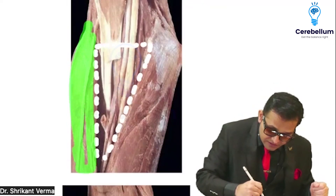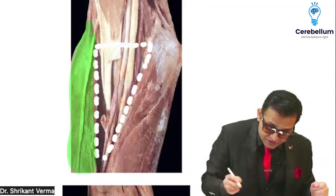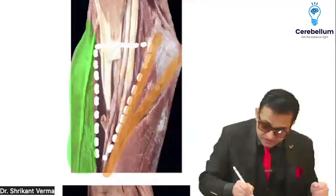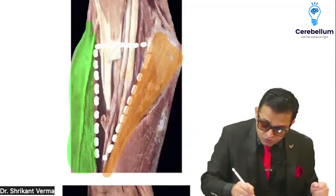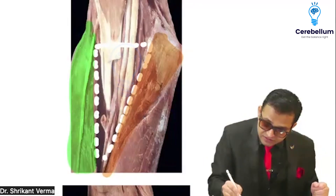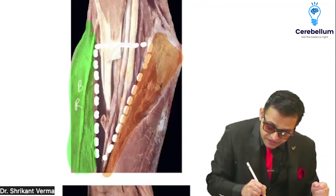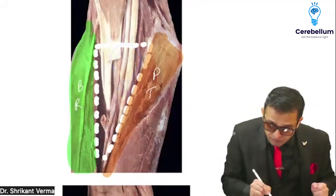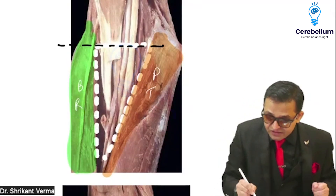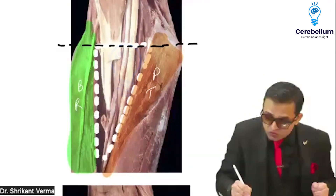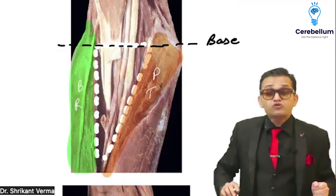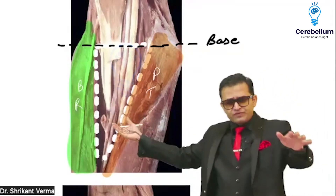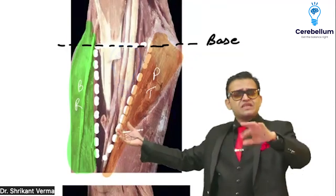The lateral boundary is formed by brachioradialis, and the medial boundary is formed by pronator teres. The base is formed by an imaginary line passing through both condyles. The roof is formed by skin, superficial fascia, deep fascia, and the cephalic, basilic, and median cubital veins.